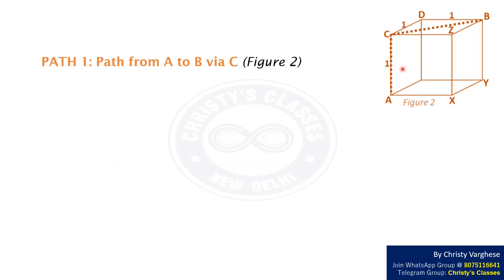Path 1 is from A to B via C as shown in figure 2. Length of this path equals length of AC plus length of BC. Length of AC equals 1 unit. We are required to find the length of BC.